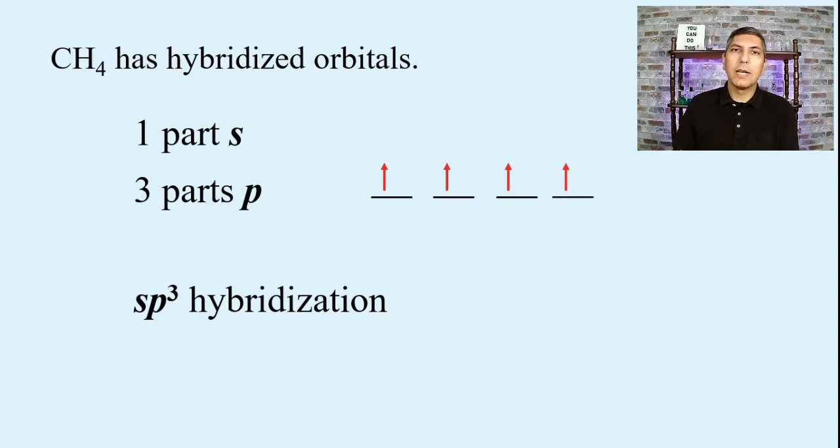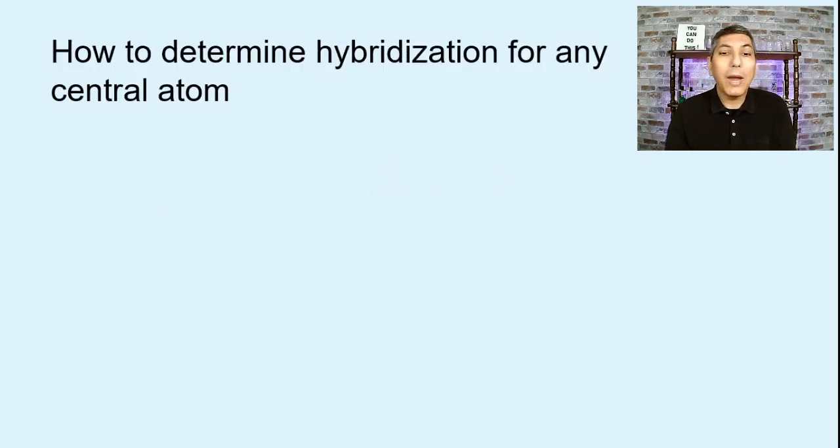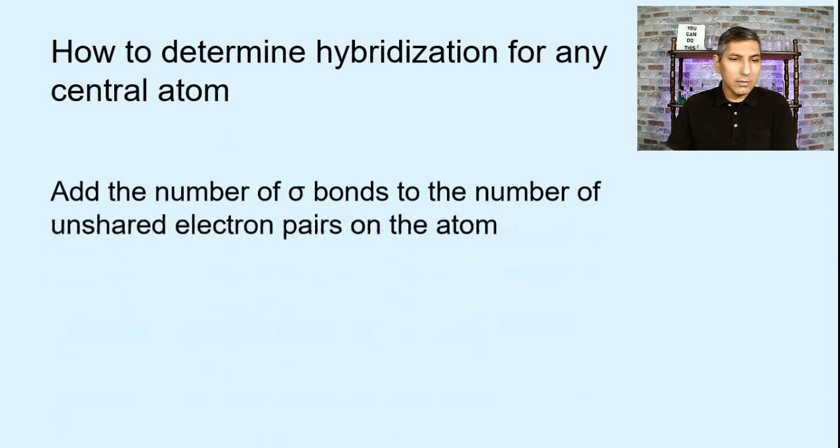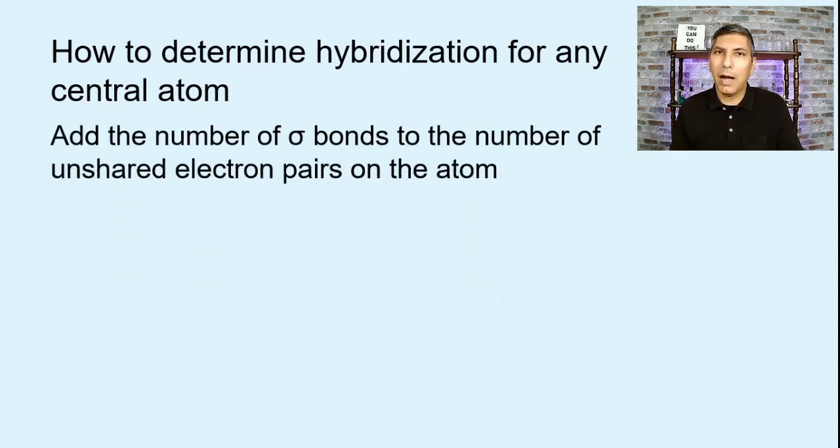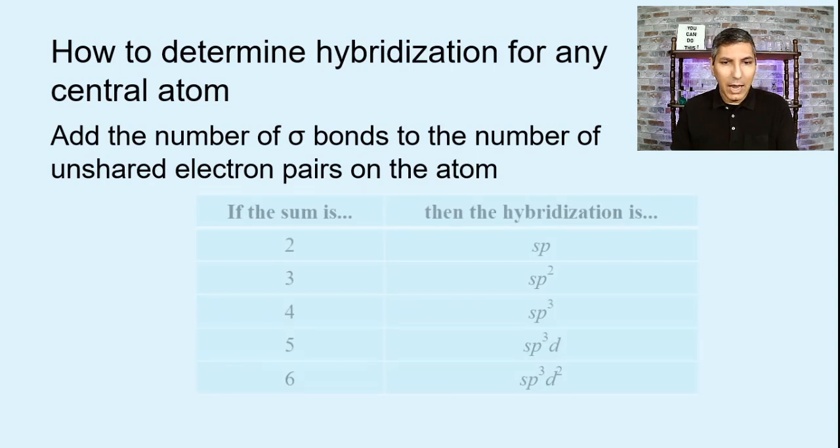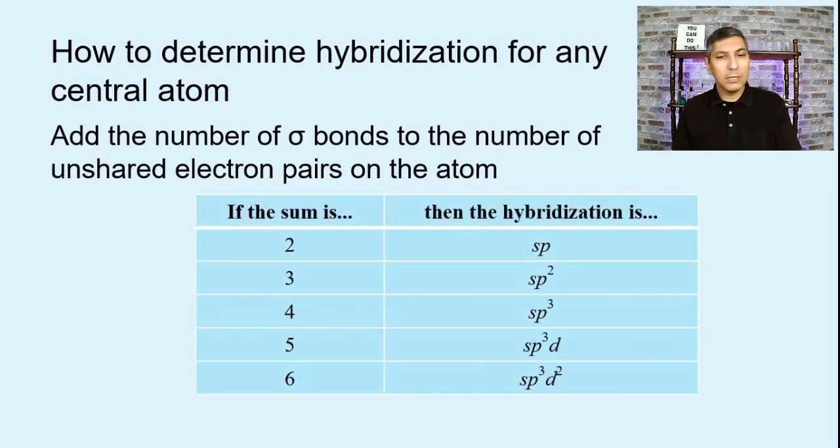So how can we determine the hybridization for any central atom in a molecule? Well, you don't have to do all this business with the arrows and the lines and all that. There's an easier way. The way to determine hybridization for any central atom is you just take the number of sigma bonds that are touching that central atom and then add it to the number of lone pairs or unshared electron pairs that are on that central atom. Now, when you do that, you're going to get a number that's between two and six. And if the number is two, then the hybridization is going to be SP.